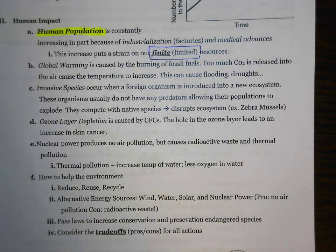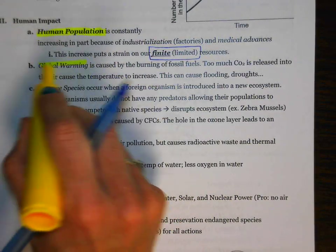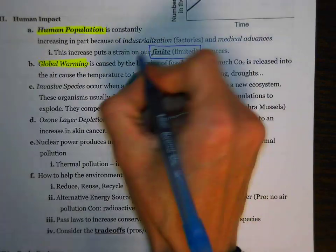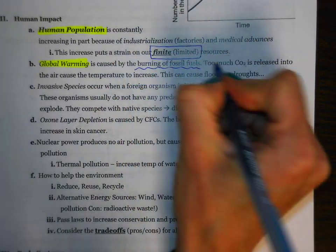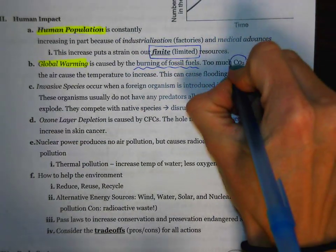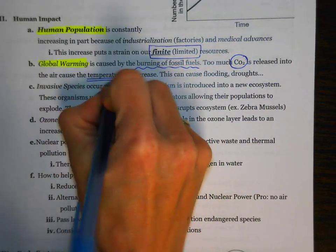Why is human population such a big deal? Human population is leading to global warming. Global warming is directly caused by the burning of fossil fuels. Burning of fossil fuels includes things like driving cars and heating your house. When you do those things, you release a lot of carbon dioxide into the air, and as you release more and more carbon dioxide, the temperature of the Earth starts to increase.